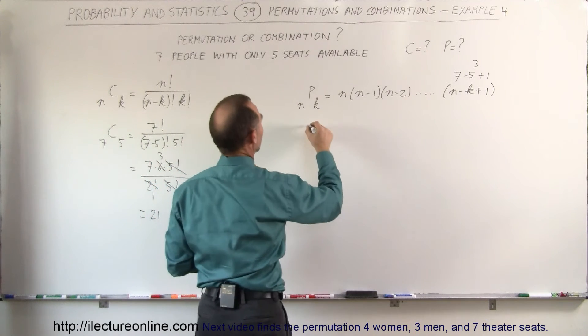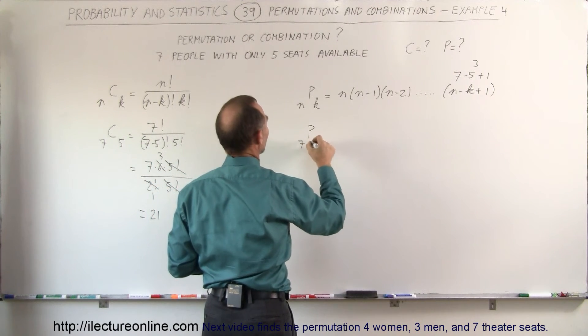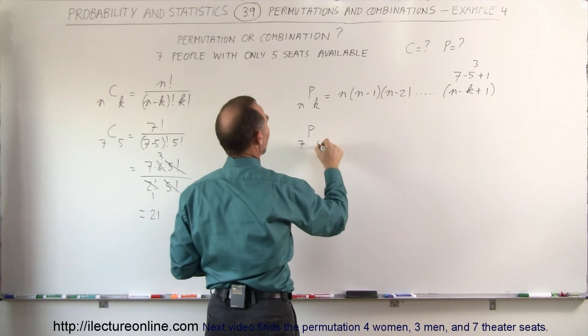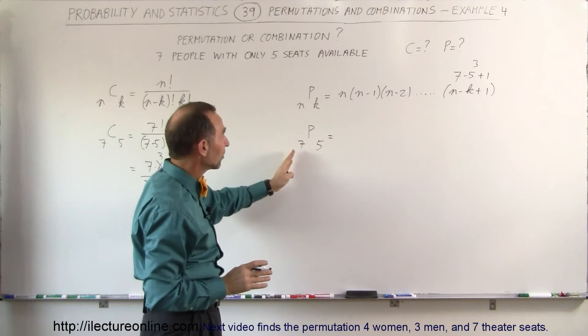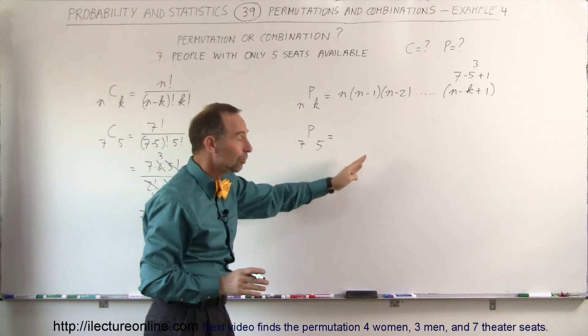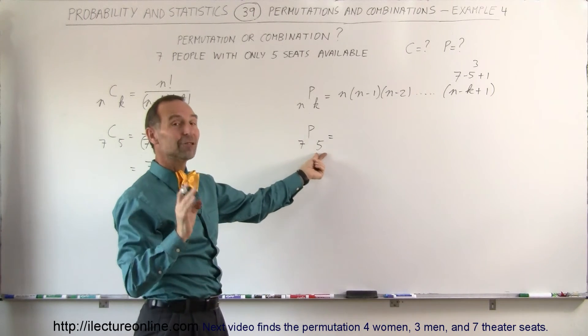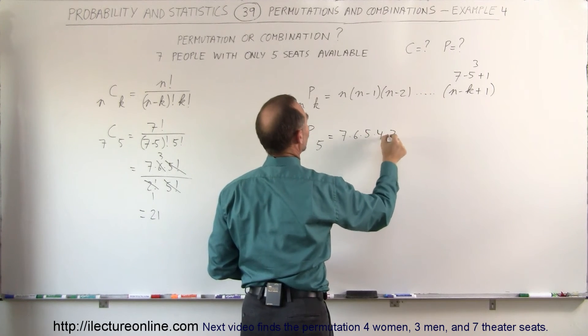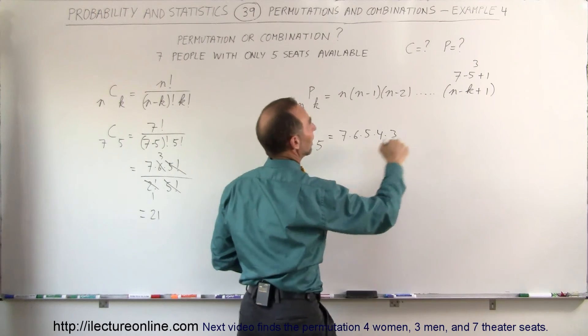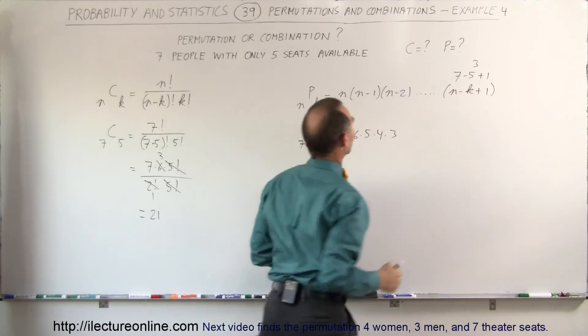So we have the permutations when we have 7 people and 5 seats is equal to, again another way to think about this, we're going to multiply 7 times 6 times 5 times 4 times 3 and so forth. There's only going to be five numbers, so it's 7 times 6 times 5 times 4 times 3, there's five numbers, and again the last number should be 3 like we discovered here.